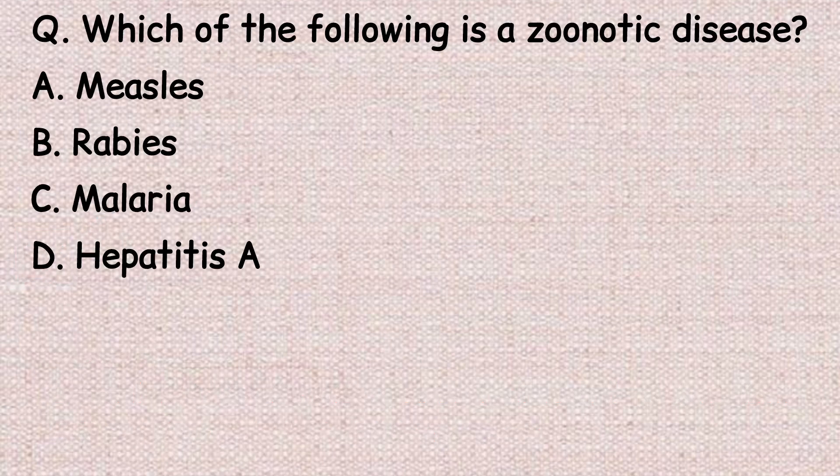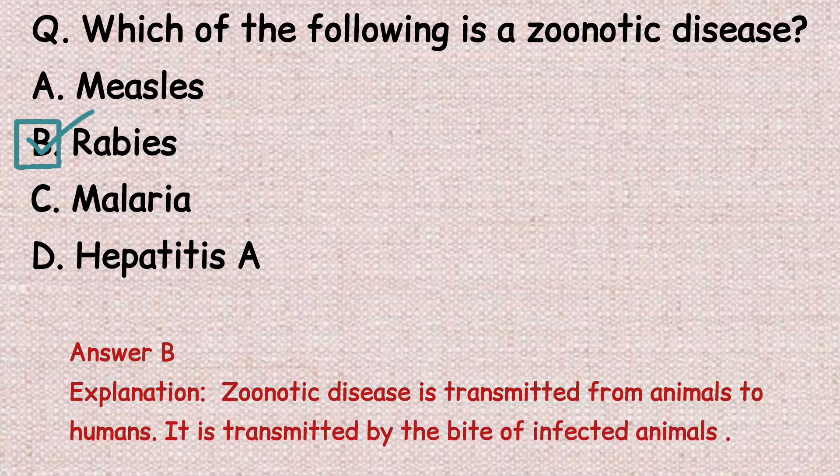The next question: which of the following is a zoonotic disease? Option A: measles. Option B: rabies. Option C: malaria. Option D: hepatitis C. The correct answer is option B, rabies. A zoonotic disease is transmitted from animals to humans; rabies is transmitted by the bite of an infected animal.